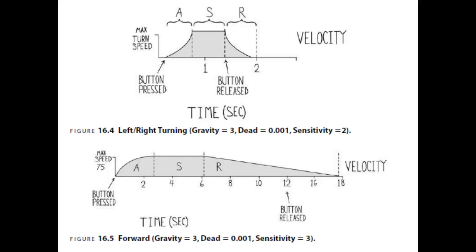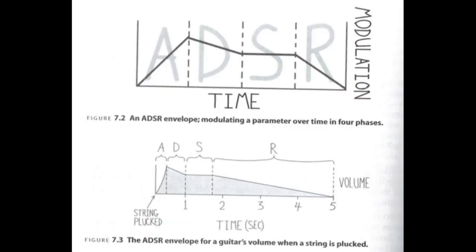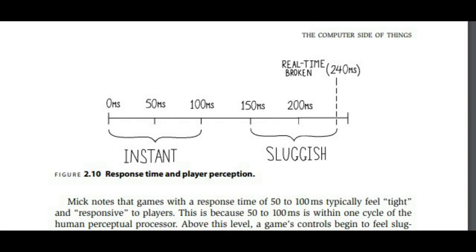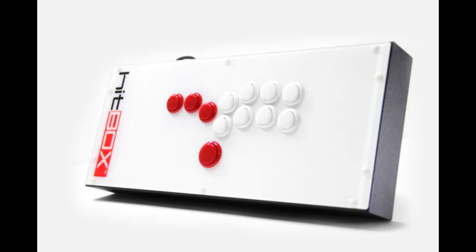Swink also conceives of the ADSR framework — Attack, Decay, Sustain, Release — which illustrates how quickly an action responds, input lag, how long it is active or active frames, and how it releases once you let go. With this conceptual framework, we can see why the degrees of freedom and sensitivity of the mouse is better for aiming, and why fighting games can be almost entirely composed of buttons like on a hitbox.